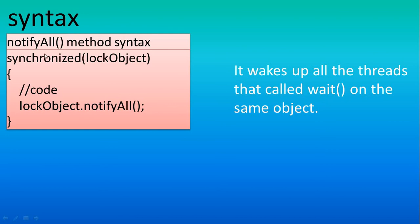The notifyAll method is similar to notify, but when you use notifyAll it wakes up all threads that called the wait method — meaning it wakes up more than one thread waiting on the same object. So now we will go into Eclipse and see a sample program.